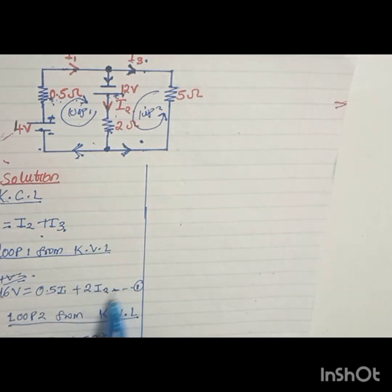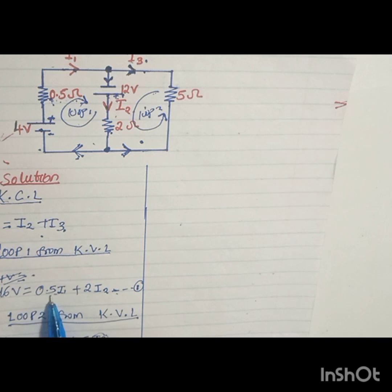So 16V equals the sum of all the drops in that loop. The drop caused by the 0.5 ohm resistor is 0.5 times I1, plus 2I2. This becomes our equation 1: 16V equals 0.5I1 plus 2I2, from Kirchhoff's voltage law.